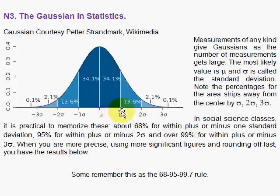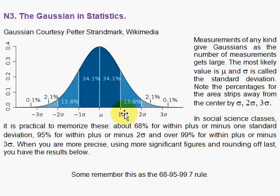If you have sigma that is small for your population, then this graph will be more peaked and narrow. If sigma is large, the dispersion will then be great. That's the review of the Gaussian in statistics.